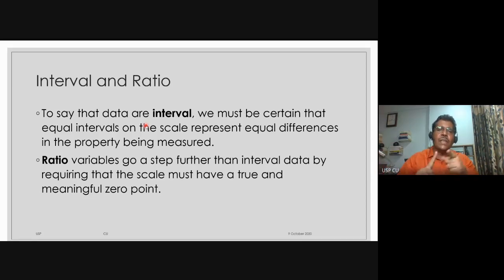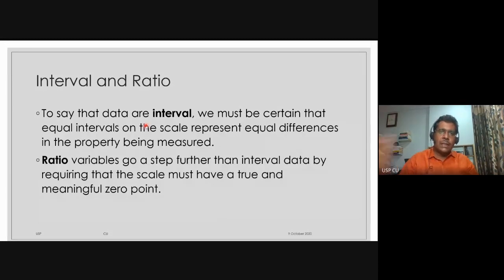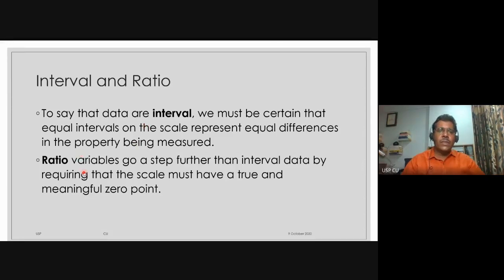For our purpose today we'll be talking about three kinds of variables: nominal variables where we're just naming categories, ordinal variables where they are ranked, and interval variables where they are continuous numbers. Likert scales are also treated as interval variables so we can do statistical analysis on them. Ratio goes one step further than interval because in the ratio variable there is a true and meaningful zero point. We'll be dealing with interval variables most of the time.